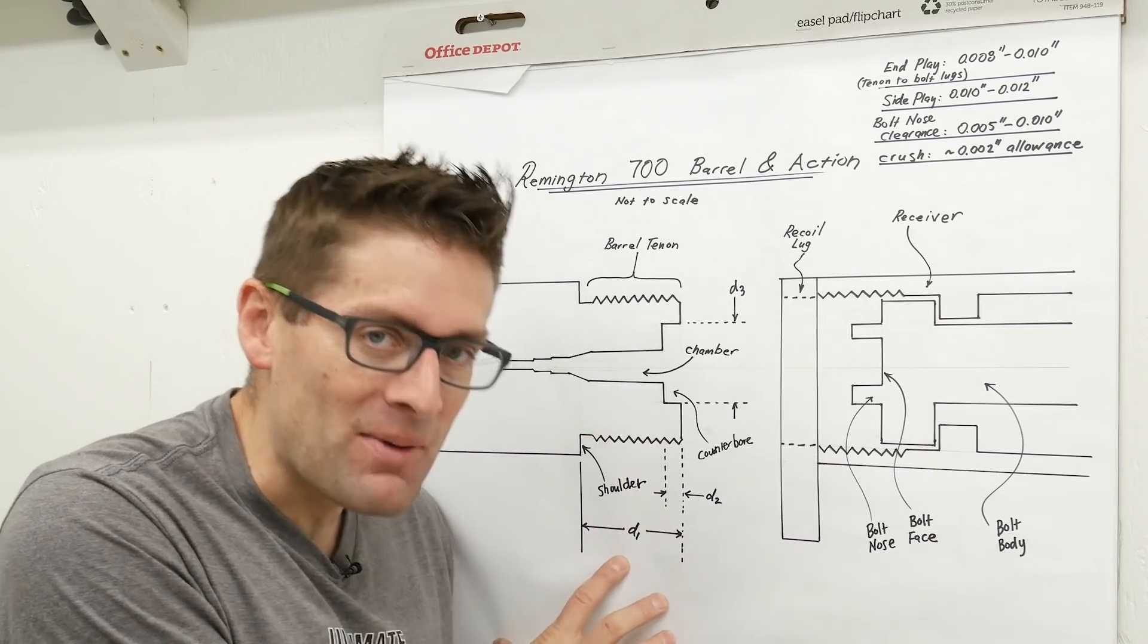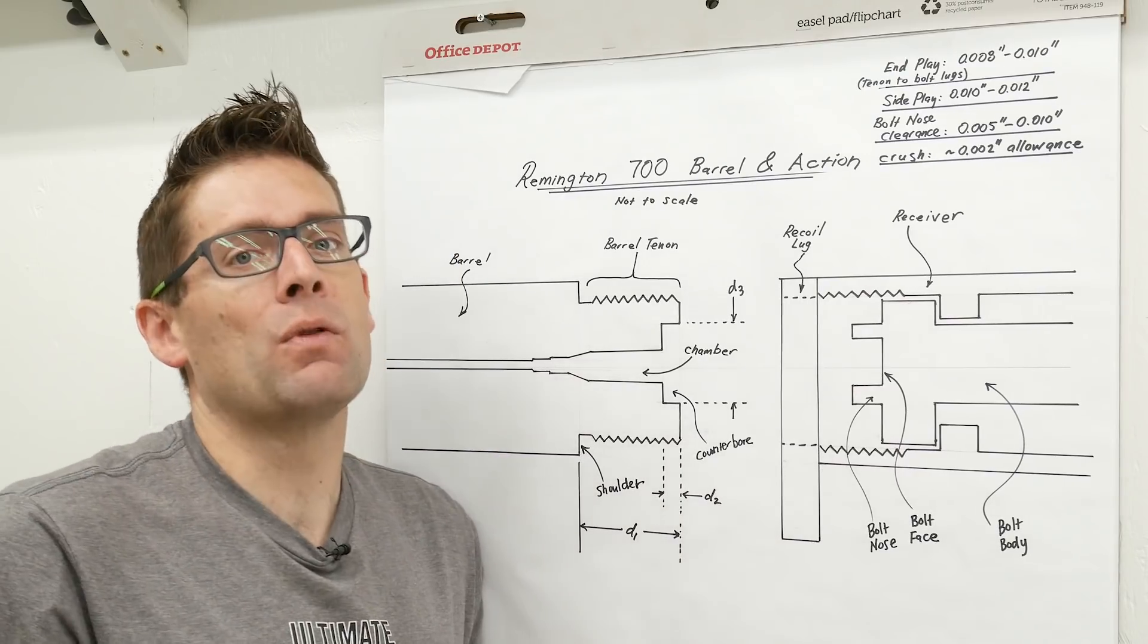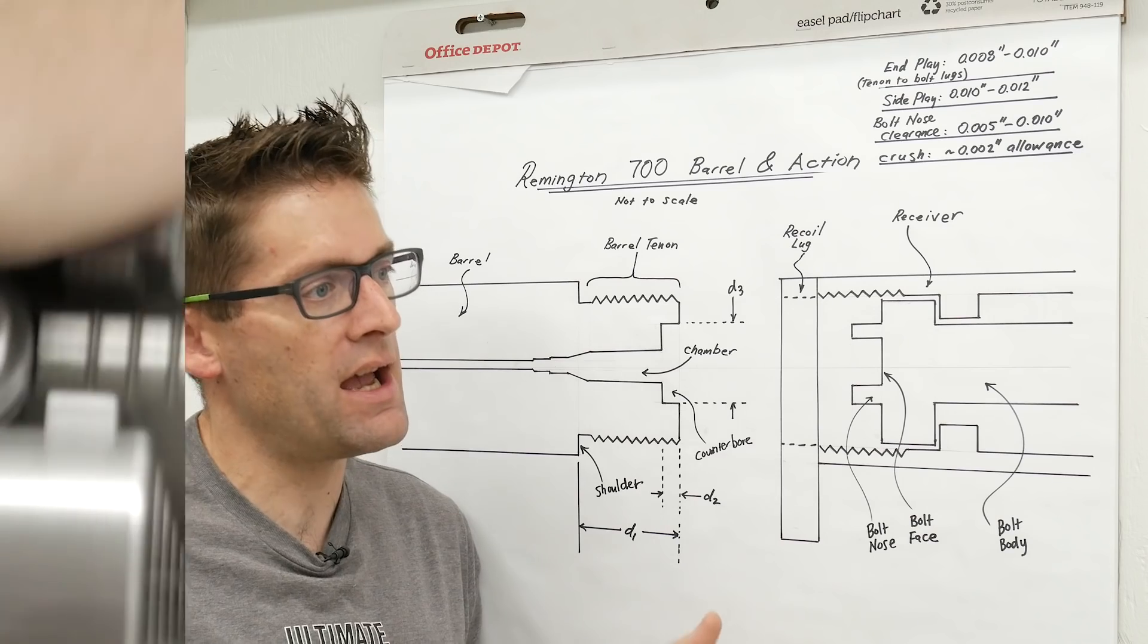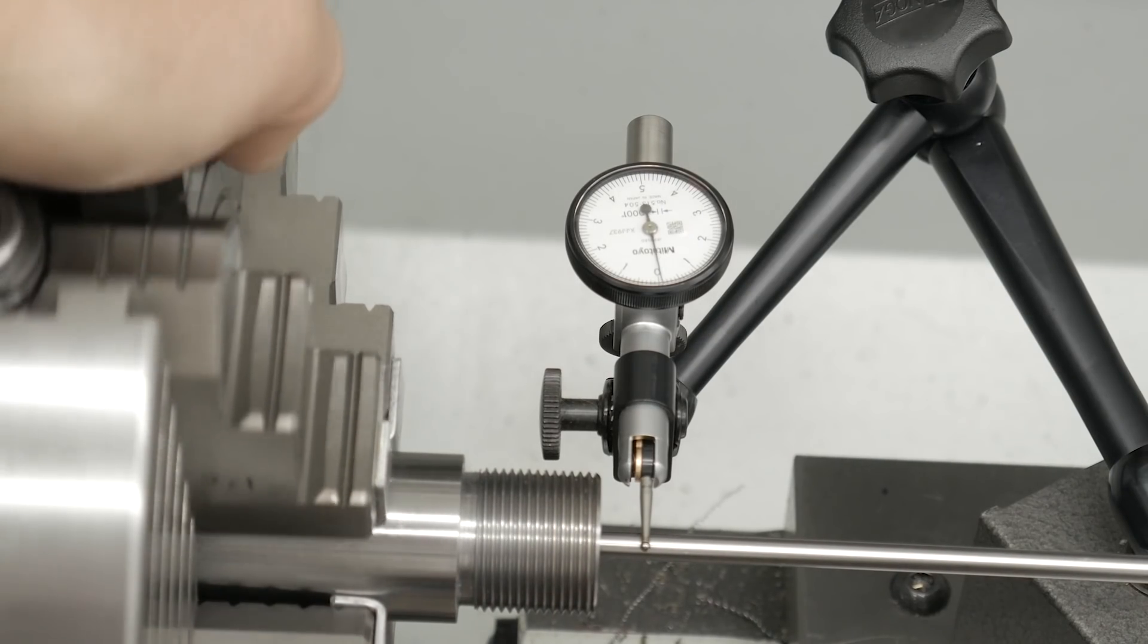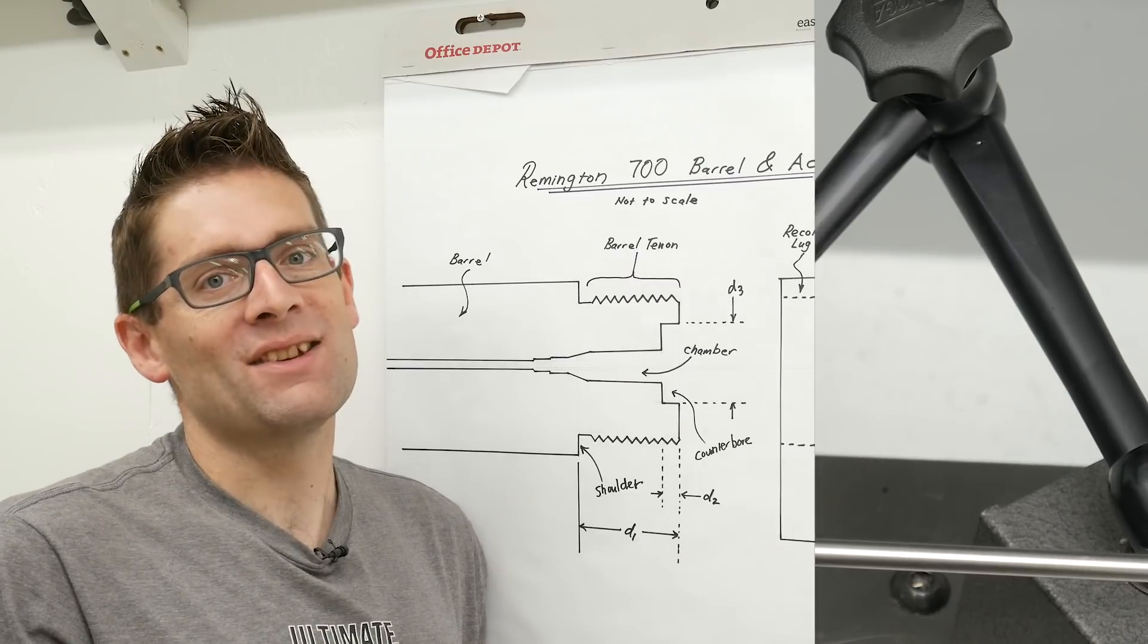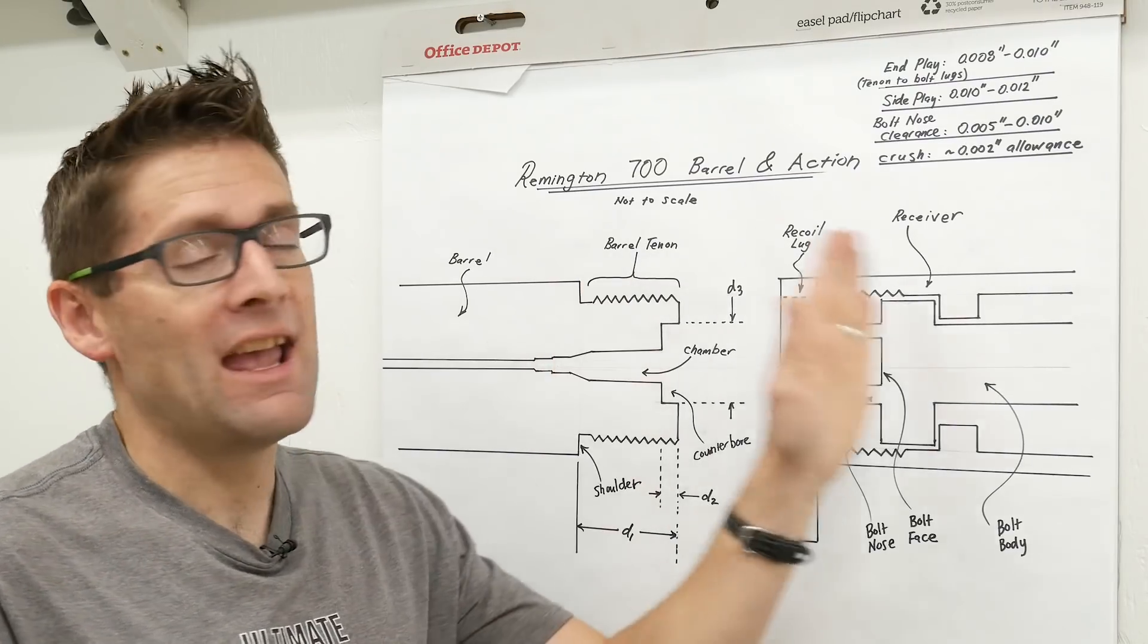So that's creating a build sheet. In the next video we're going to actually start the process. We're going to take the barrel blank, we're going to cut it down, we're going to get it installed on the lathe and get it trued up, get it indicated, and then we'll be ready to start actually cutting and chambering.